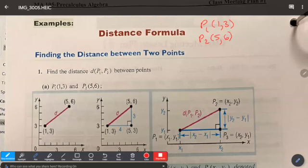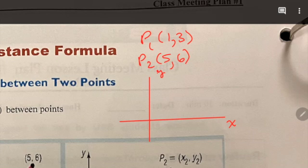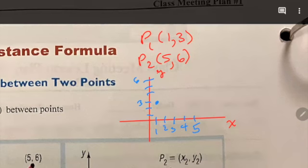As the diagram is written, we can visualize the distance here. So I've got point 1 at (1,3)—that's 1, 2, 3 on the y-axis. Then we've got point 2 at (5,6)—that's 1, 2, 3, 4, 5 in the x direction, and 1, 2, 3, 4, 5, 6 in the y direction. So this is our point 1, this is our point 2, and we're trying to find the distance between the two.